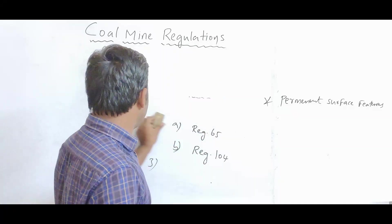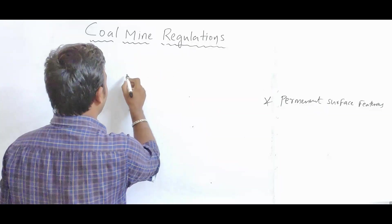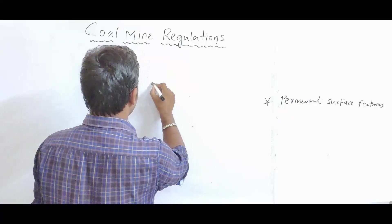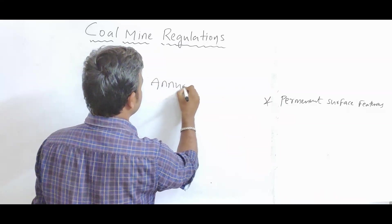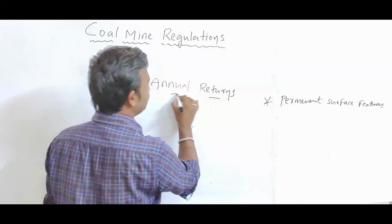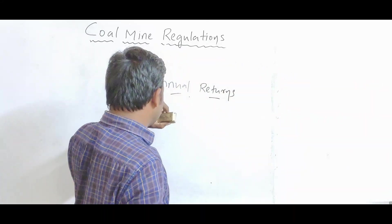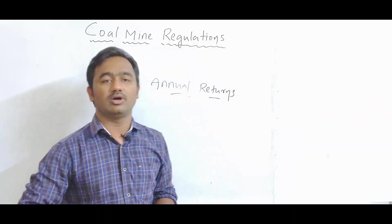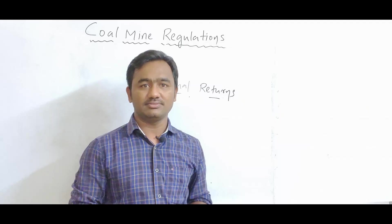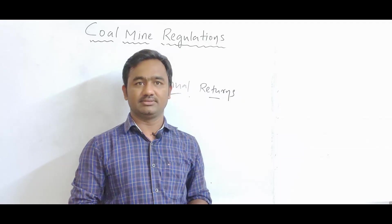Now we are going to discuss Regulation Number 4: Annual Returns. On or before the first day of February in every year, the owner, agent, or manager shall submit to the Chief Inspector the annual returns.